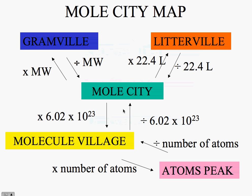Here we have our Mole City Map. The Mole City Map tells us how to convert from one factor to another. In Gramsville, we have grams. In Leaderville, we have liters. In Mole City, we have moles. In Molecule Village, there only exist molecules. In Adams Peak, there only exist atoms. In order to go from one area to the next, we have to perform a calculation.